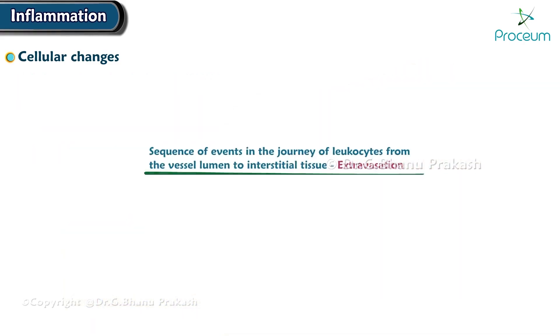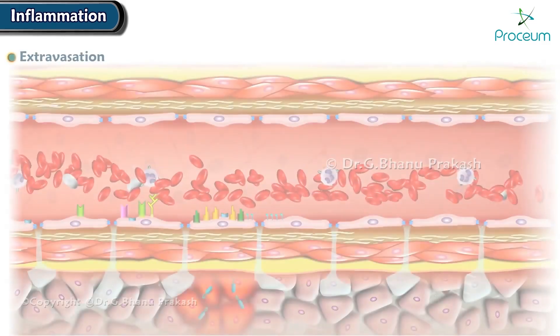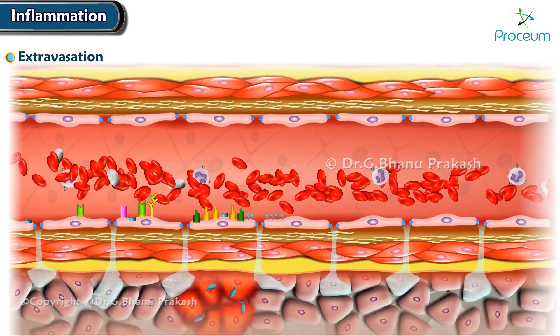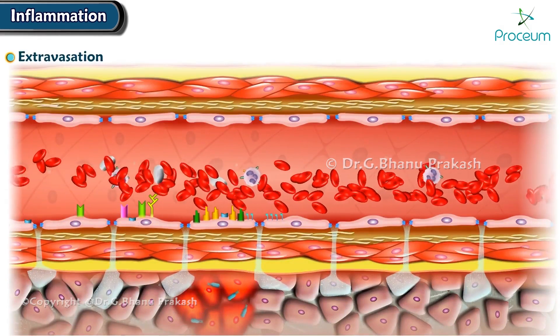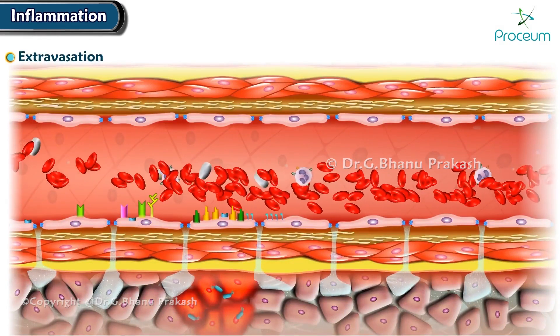The sequence of events in the journey of leukocytes from the vessel lumen to interstitial tissue is called extravasation. Extravasation has the following steps.